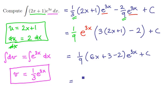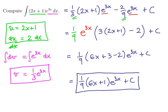And I'll just rearrange those terms. One more round of cleanup. We get 1 ninth times 6x plus 1 times e to the 3x plus the integration constant. And there's a more simplified version of our antiderivative. Either are acceptable.